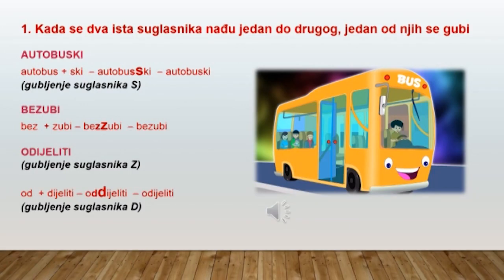Gubljenje suglasnika se dakle vrši u sljedećim slučajevima. Kada se dva ista suglasnika nađu jedan do drugog, onda se jedan od njih gubi. Kao u riječima autobuski – u ovom prisvojnom pridjevu imamo gubljenje suglasnika S. U pridjevu bez zubi gubi se suglasnik Z, a u glagolu odijeliti imamo gubljenje suglasnika D.